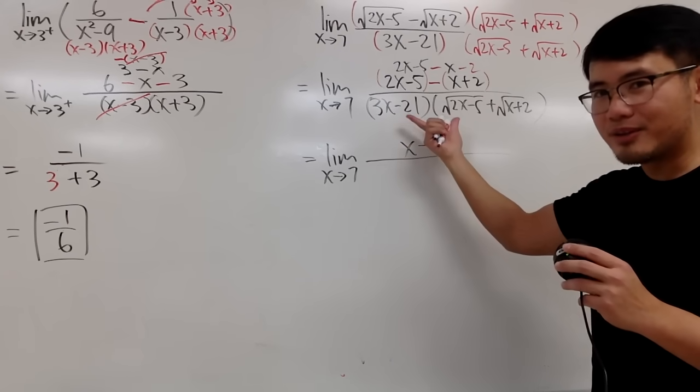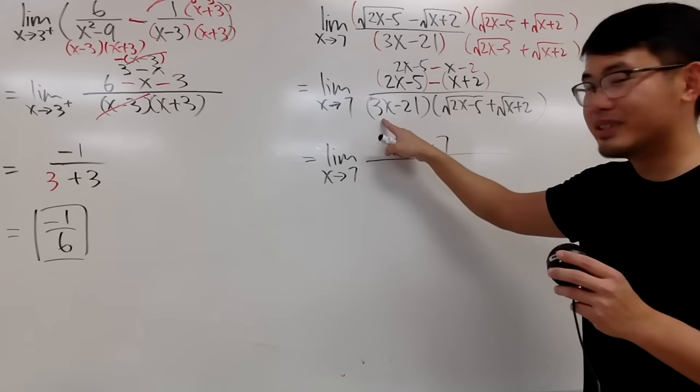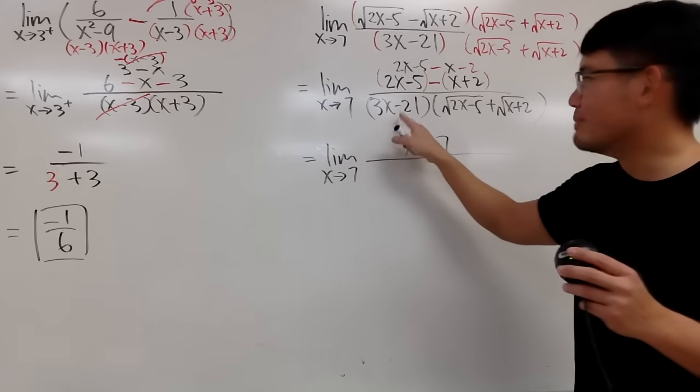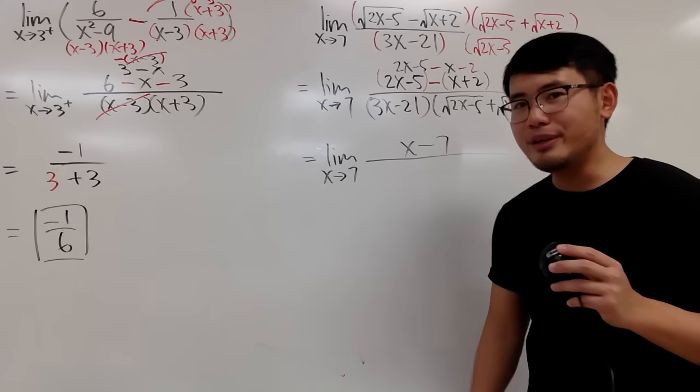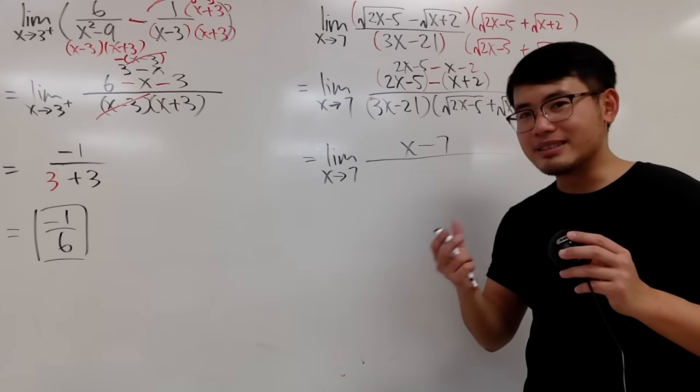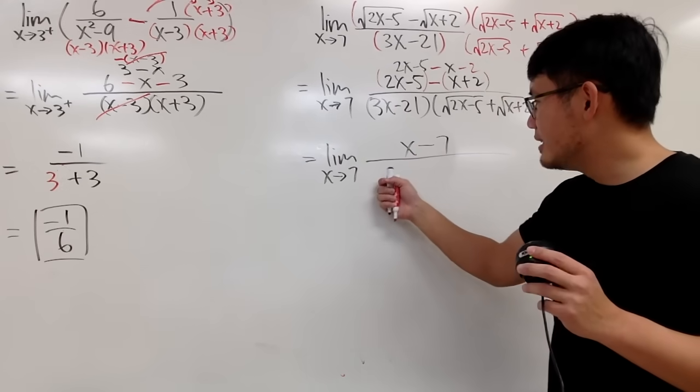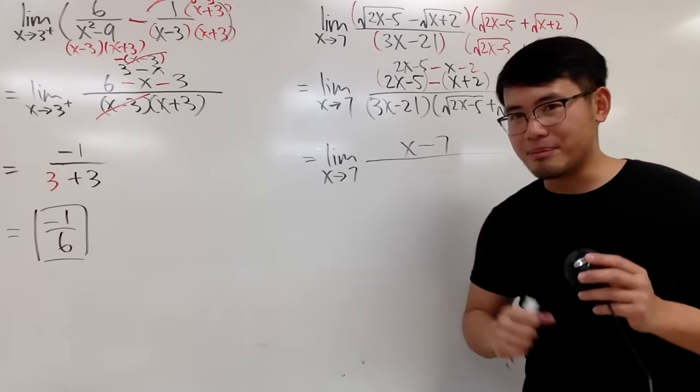Well, that's the top. And now, look at the bottom. Especially this factor. 3x minus 21. In fact, if we factor out 3, we end up with x minus 7 as well. And then, this x minus 7 and that x minus 7 can be cancelled.